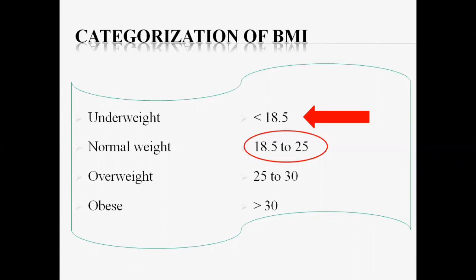Ishaal must adopt such measures and manage her health or weight to bring it into the normal range. The ideal or healthy weight has a BMI ranging between 19 and 24, but she falls in the underweight category. She must gain some weight and make changes in her diet or lifestyle to reach a healthy state. You can also track your BMI on a regular basis, such as monthly, to manage your health.